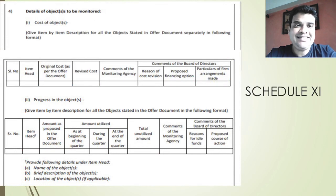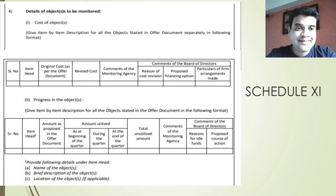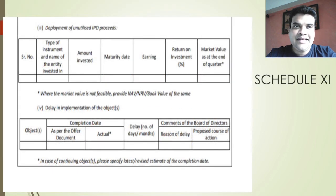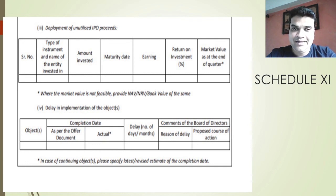The report must also contain details of the objects to be monitored — what is being monitored, the cost of the objects, the original cost as per the offer document, the revised cost, comments of the monitoring agency, and comments of the directors. Then the progress in the objects: the amount utilized at the beginning of the quarter, during the quarter, and at the end of the quarter. Also the deployment of utilized IPO proceeds — amount invested, maturity date, earnings, return on investment, and the delay in implementing the objects. The completion date as per the offer document, the actual date, the delay in days or months, and the reason for delay are covered under the comments of the board of directors.